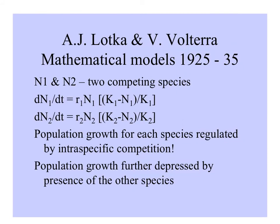Lotka and Volterra made mathematical models to describe the interaction of two competing species, N1 and N2. The change in population size of species 1 equals r times N — the intrinsic rate of increase — times its population size, multiplied by how close that species' population size is to its carrying capacity: (K1 minus N1) over K1. The same goes for species 2 with the equivalent terms substituted. The growth for each species is regulated by competition with its own individuals — intraspecific competition — but their population growth is further depressed by the presence of the other species.